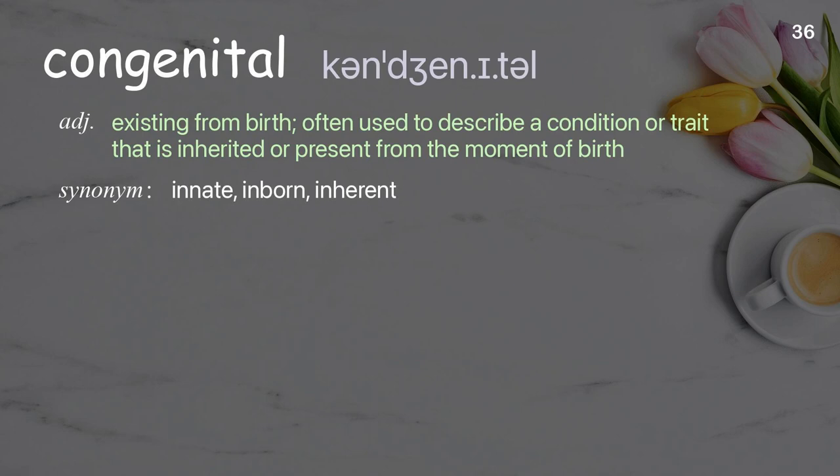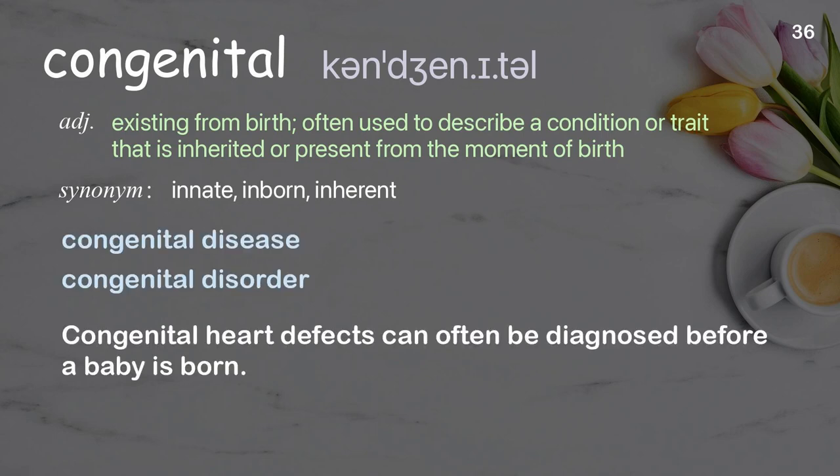Congenital. Existing from birth, often used to describe a condition or trait that is inherited or present from the moment of birth. Examples: congenital disease, congenital disorder. Congenital heart defects can often be diagnosed before a baby is born.